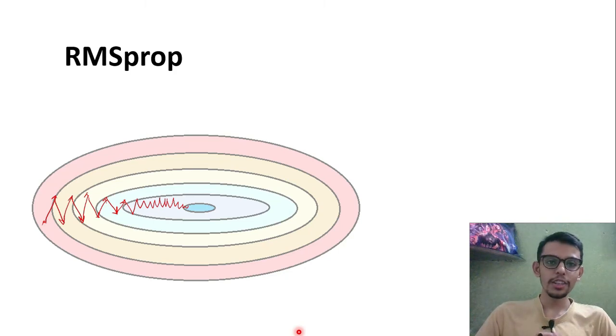RMSprop is an optimization algorithm which speeds up the training of our model. If you already know about mini-batch gradient descent, then you will know that the weight updation takes place in this zigzag manner and a lot of time gets wasted moving in the vertical direction and taking this zigzag path instead of moving directly straight towards the local minima.